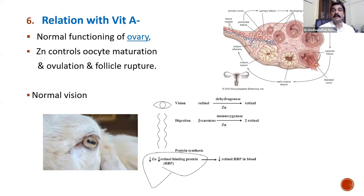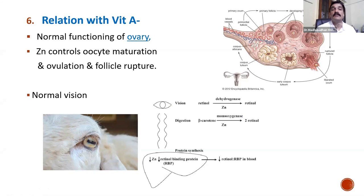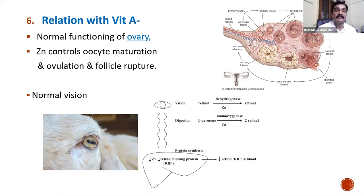In relation with vitamin A, zinc is involved in the normal functioning of the ovary — for follicle rupture, oocyte maturation, and ovulation. Zinc, in collaboration with vitamin A, controls these functions. It is also required for normal vision: zinc acts as a cofactor with dehydrogenase to convert retinol to retinal. If zinc is absent, all these functions — ovulation, oocyte maturation, follicle rupture, and vision — are hampered.